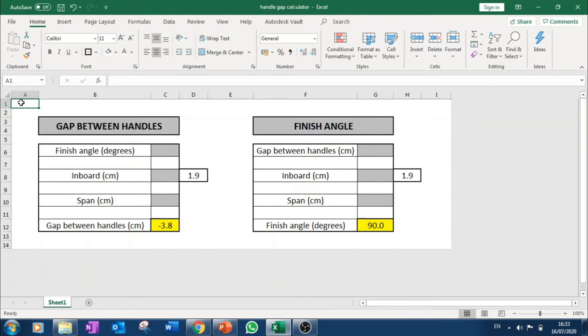I'm going to show you how to use the two calculators that I made. The one on the left tells you how many centimeters between the oar handles for a certain finish angle. The one on the right tells you what your finish angle is for a certain gap between the oar handles. You need to fill in the grey boxes and the answer is in the yellow box.